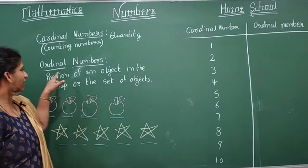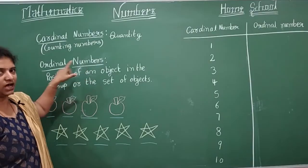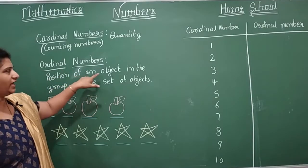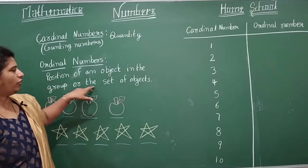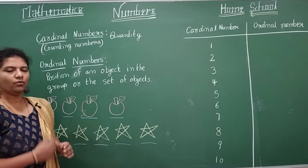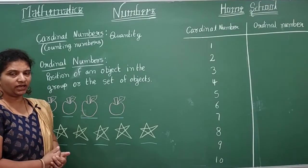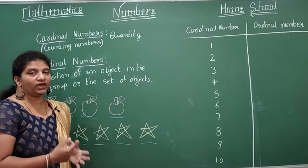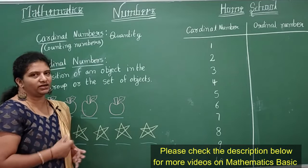Now, what are ordinal numbers? Ordinal numbers are those which show the position of an object in a group or set of objects. Are there any new numbers? No, not at all. The way of saying the position of a number is called the ordinal number.